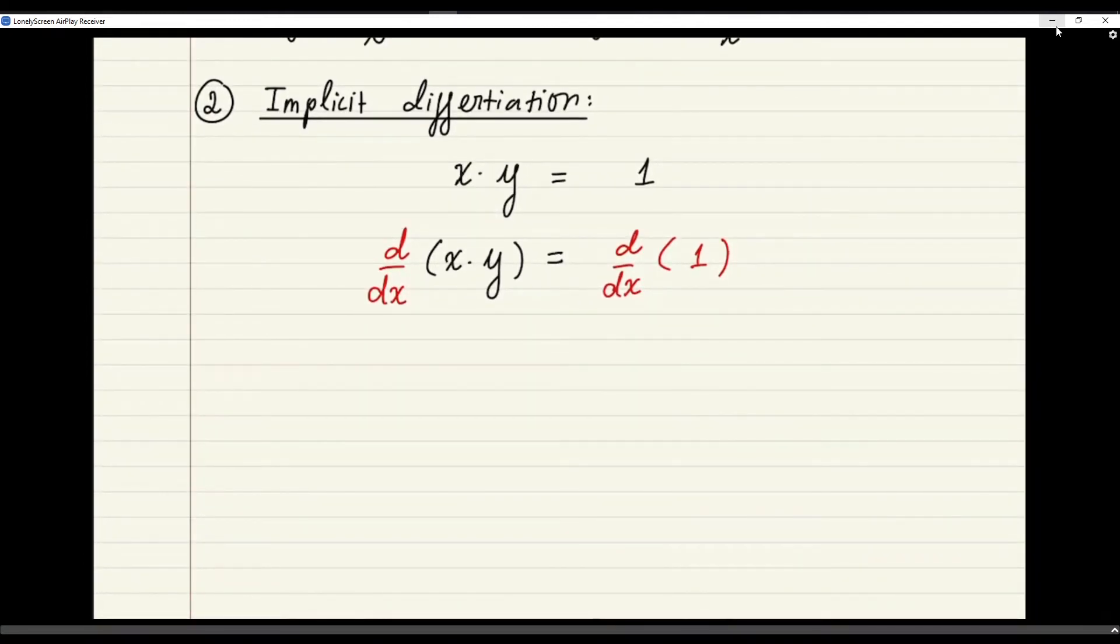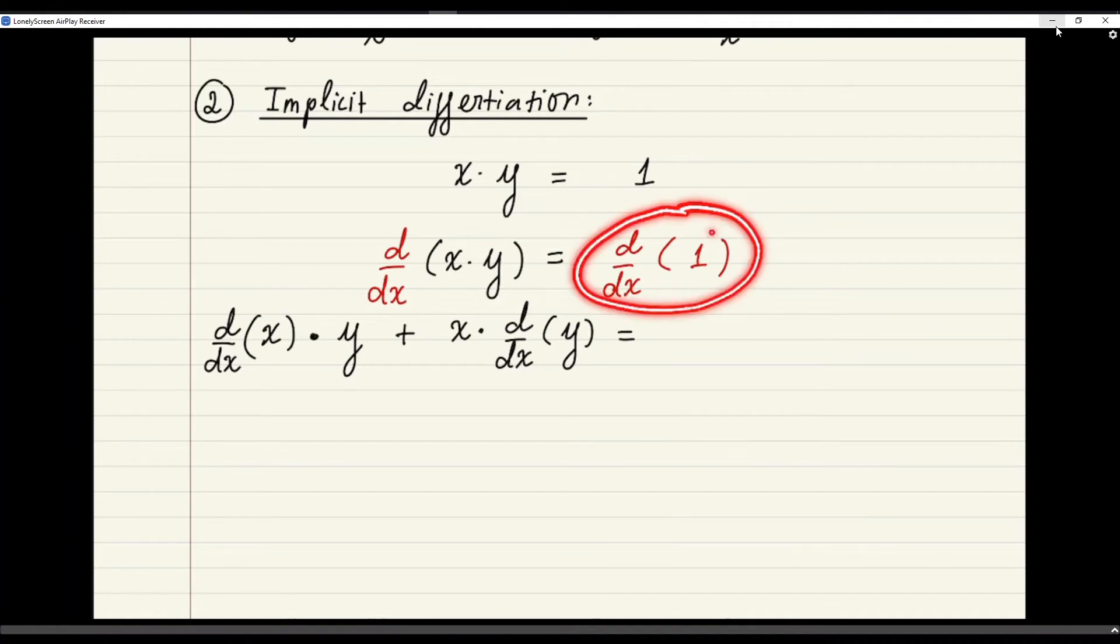So the product rule tells us that this will be equal to the derivative of the first thing times the second thing plus first times the derivative of second. On the right hand side, we are taking the derivative of a constant. So that will be zero.